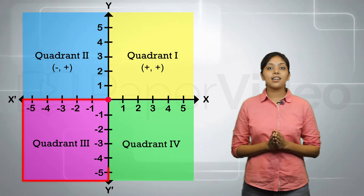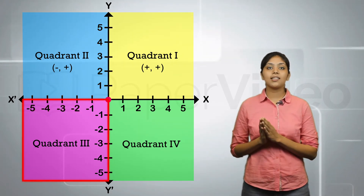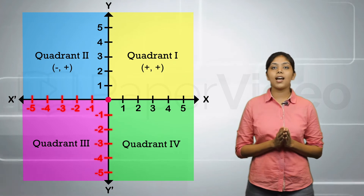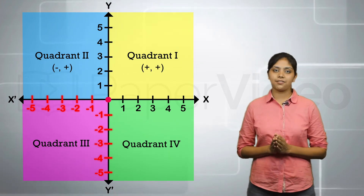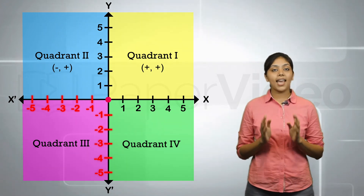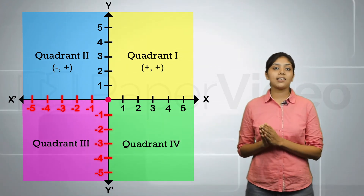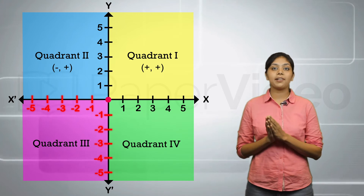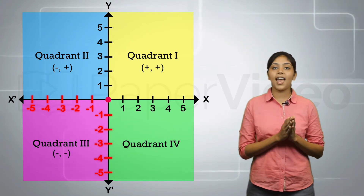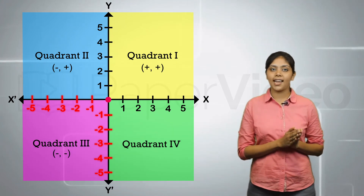In the third quadrant, the x-coordinate and the y-coordinate are both negative. This means that any point lying in the third quadrant will have both its abscissa and ordinate negative.